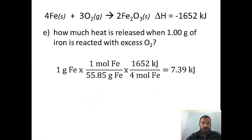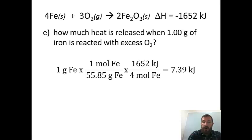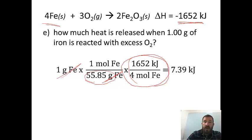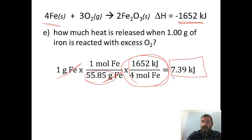Question E: how much heat is released when one gram of iron is reacted with excess oxygen? We start with one gram of iron, but we have to convert grams to moles first. We get the molar mass of iron from the periodic table, which is 55.85, and that cancels grams of iron. Now we have moles, and we apply the same ratio of (1,652 kJ / 4 moles of iron). In your calculator: 1 ÷ 55.85 × 1,652 ÷ 4, which gives us 7.39 kilojoules.